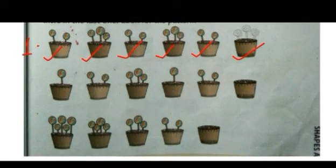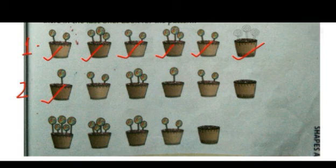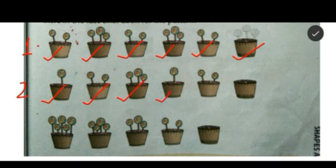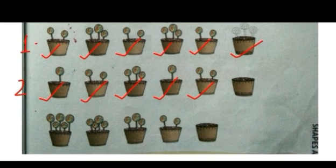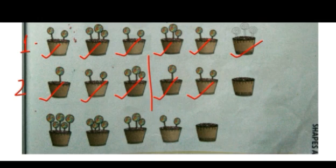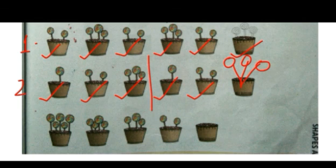Now see the next pattern. What is the pattern going on? One, two, three — then again one, two. So what is the number of lollipops that will come here? Three. The pattern going on here is one, two, three, then again one, two, three. So we will draw three lollipops and you can color it.